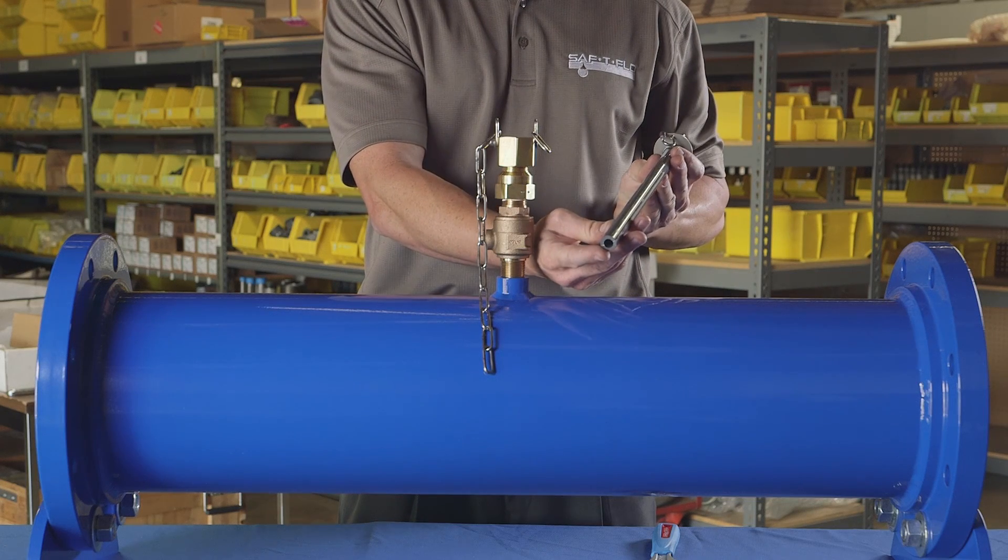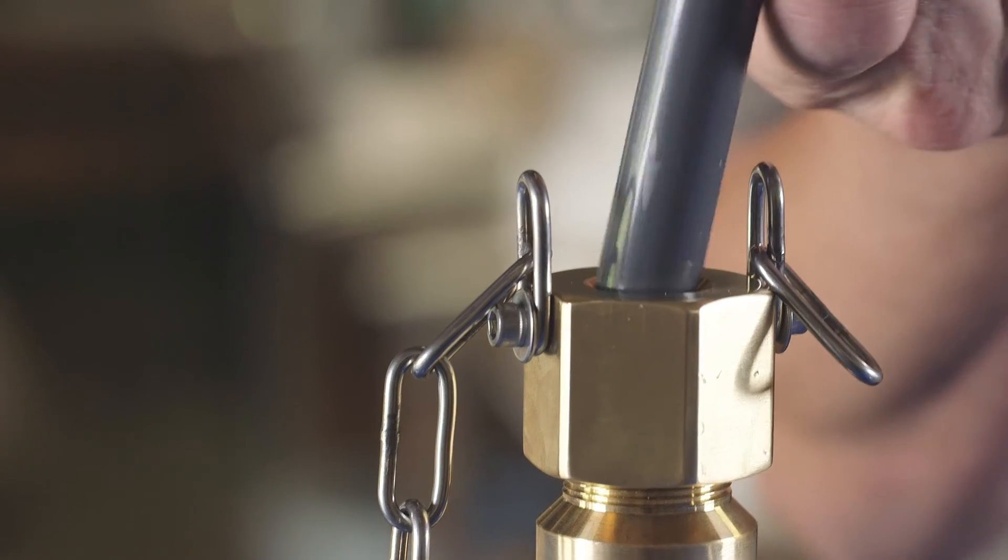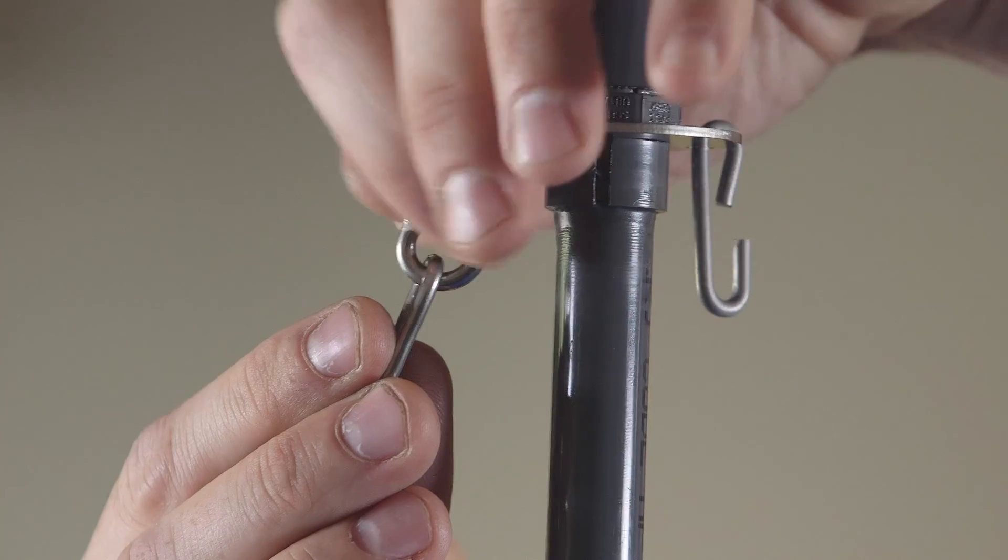To insert the solution tube, the process is simply reversed. Insert the outlet end of the solution tube into the packing nut until the tip is stopped by the closed valve. Connect the limit chain to the threaded connector and close the jaw.